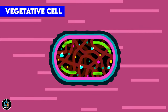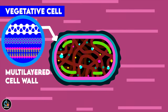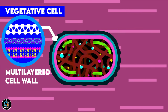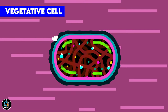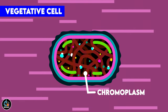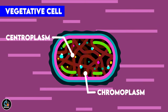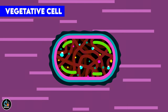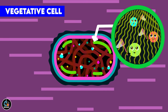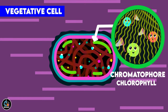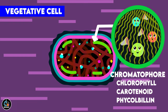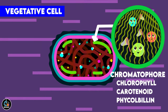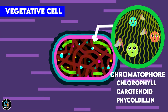The cell wall consists of several layers made up of a polymer of modified sugar called peptidoglycan. The cytoplasm can be distributed as the pigment-containing peripheral part, the chromoplasm, and the colorless central part, the centroplasm. Cyanobacteria show the presence of a wide range of photosynthetic pigments like chlorophyll, carotenoids, and phycobilins, attached to membranous structures called chromatophores. The presence of such a wide range of pigments helps them to harness energy from different wavelengths of sunlight.